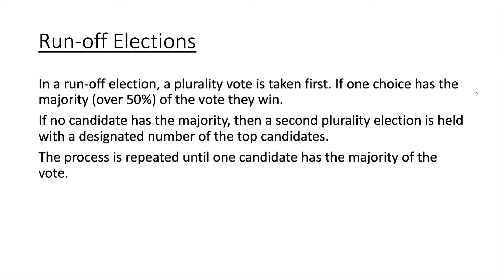Now we're going to be talking about runoff elections. The general idea is: first, a plurality vote is taken. If one choice has the majority — over 50% of the votes — they win. If no candidate has the majority, a second plurality election is held with a designated number of the top candidates, generally just the top two. This process is repeated until one candidate has the majority of votes.